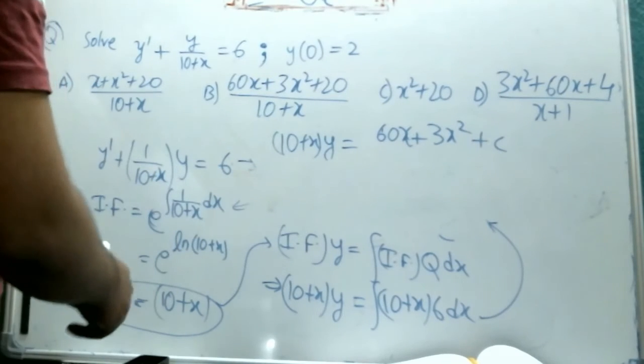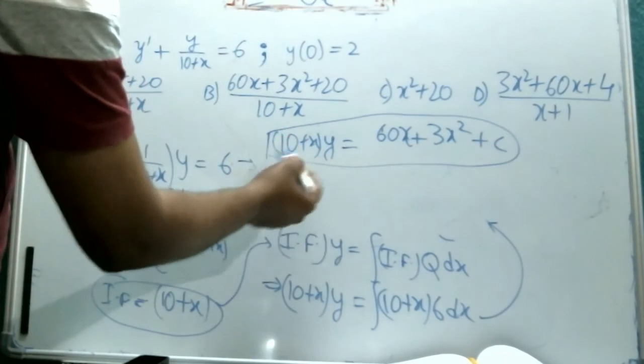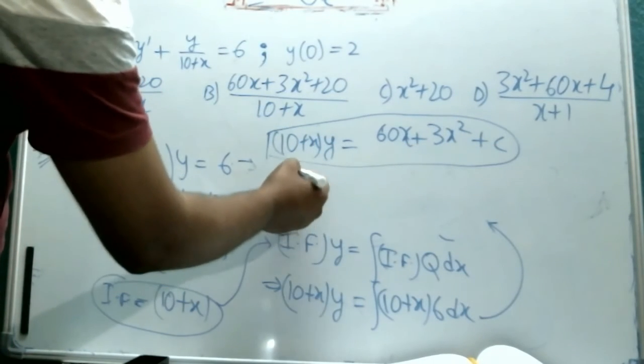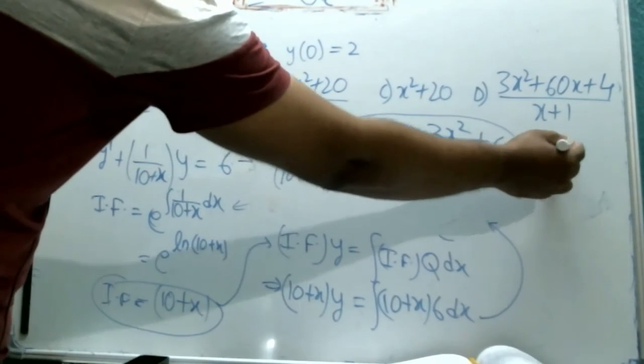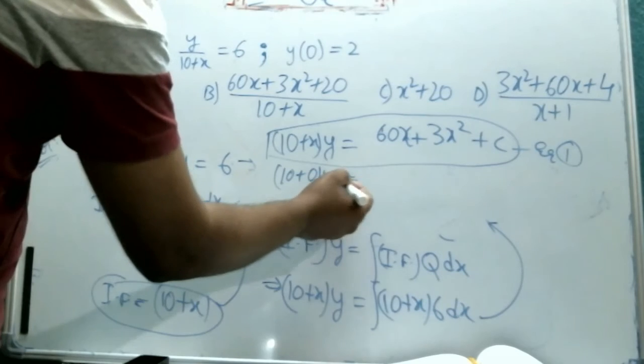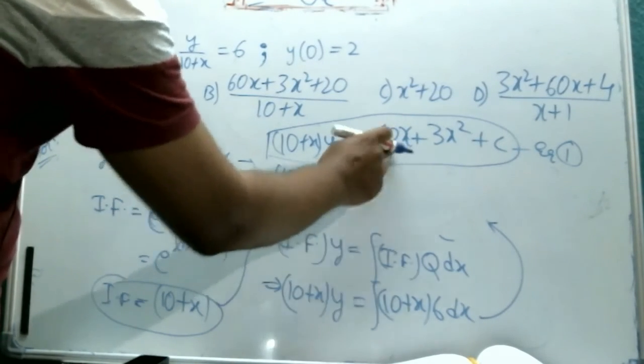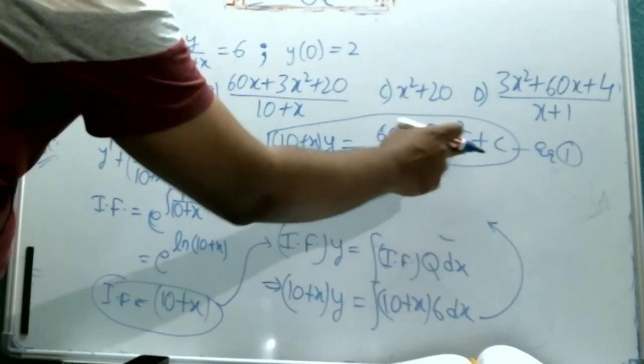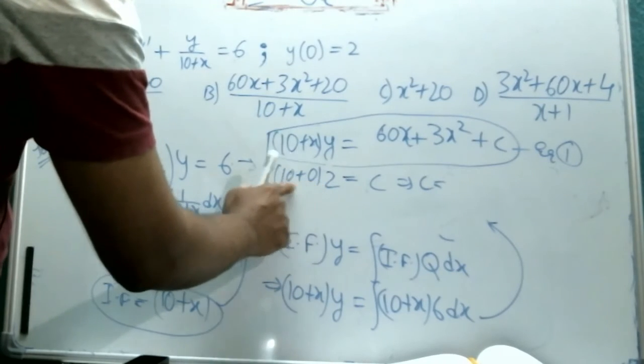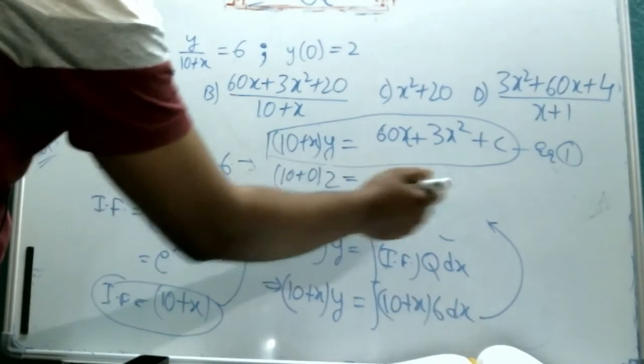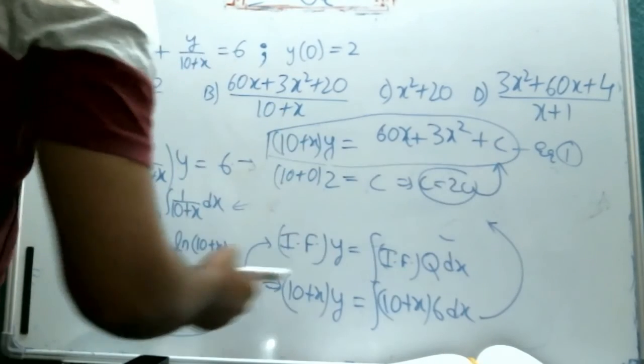Now, he has already told us that when x equal to 0, y will be 2. Substitute that: 10 plus 0 into y. This is equation number 1. 10y, what will be y? y will be 2. Equals to 60 into 0 is 0 plus 3 into 0 square is 0 plus c. Which implies c will be 10 into 2, 20. So c equal to 20.